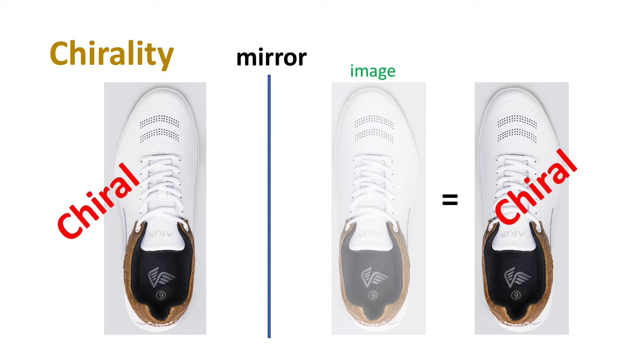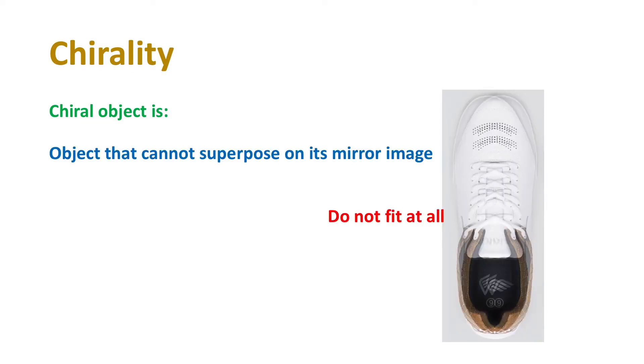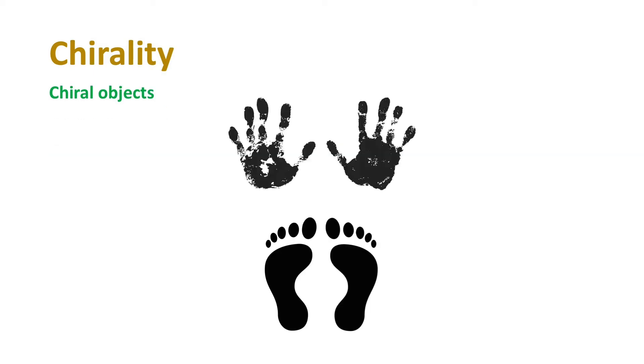So, the chiral objects are those objects that cannot superpose on its mirror image. Similarly, our hands or our feet are also chiral objects. If we place them in front of mirror, the image will be exactly the same as the other one.